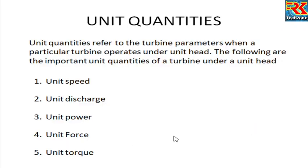Now, unit quantities. This is the theory part. What is unit speed, what is unit discharge, what is unit power — we need to look at these. Unit quantities refer to the turbine parameters when a particular turbine operates under unit head. The important unit quantities are: unit speed, unit discharge, unit power, unit force, and unit torque.